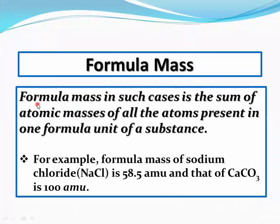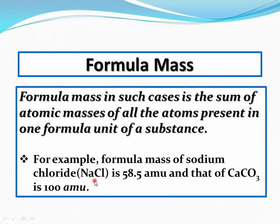Formula mass: the sum of atomic masses of all the atoms present in one formula unit of a substance is its formula mass. The term formula mass is used for ionic substances. In ionic substances, formed by the reaction of metals and non-metals, the metal loses an electron to form a cation (positive ion) and the non-metal gains an electron to become an anion (negative ion). Each positive-negative pair is considered as a formula unit.